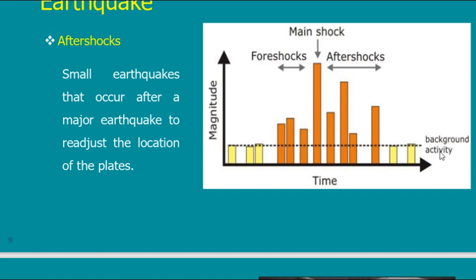To summarize the terminology: background activities are the normal daily movements people do not feel at all. Foreshocks are movements that happen before the main earthquake — sensed by some people but very moderate. The main shock is the primary earthquake, and its magnitude defines the event. Aftershocks are stronger movements that happen after the main shock; in Arabic they are called 'tawabet al-zilzal,' and they are very important in everyday life.